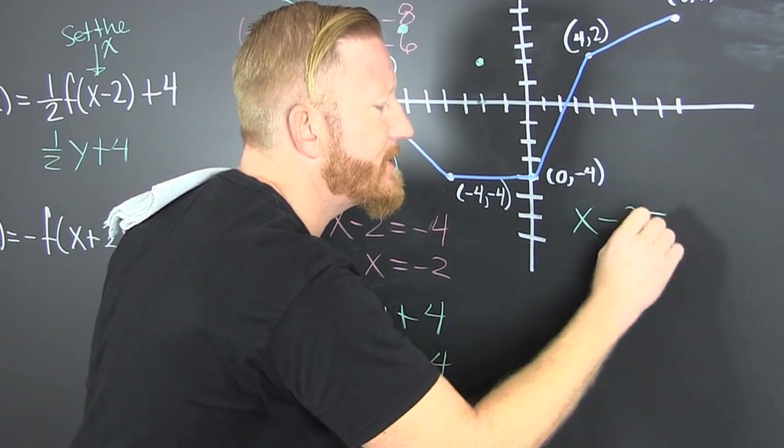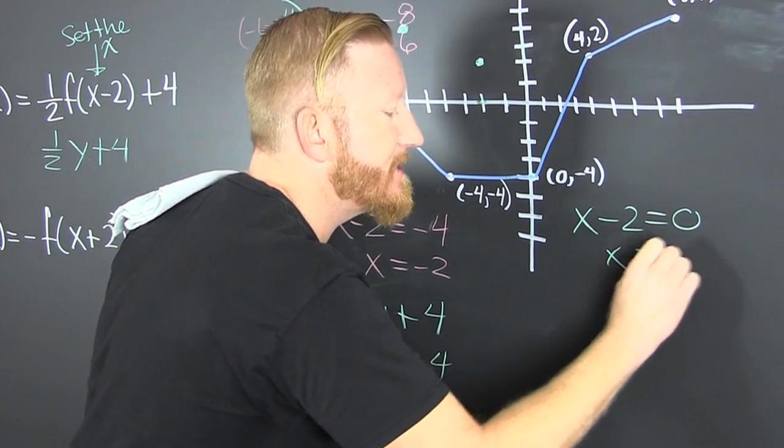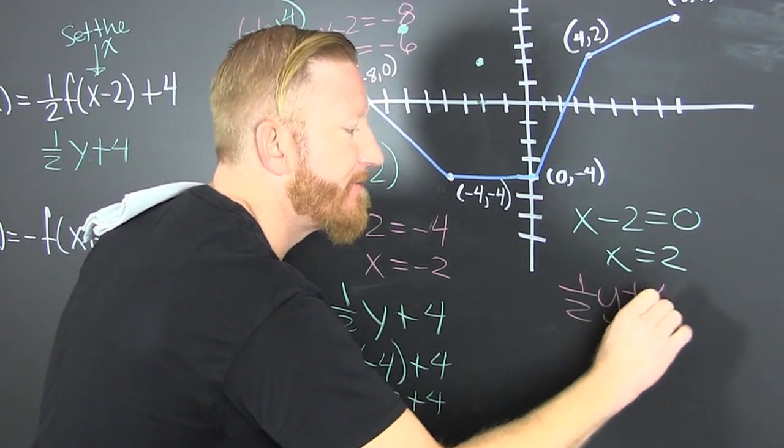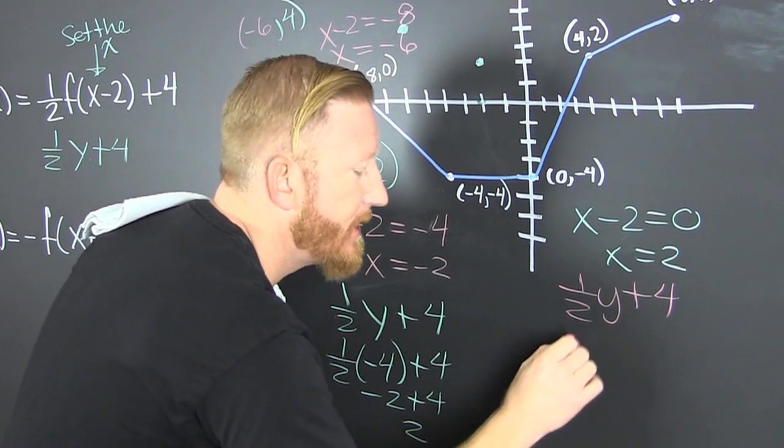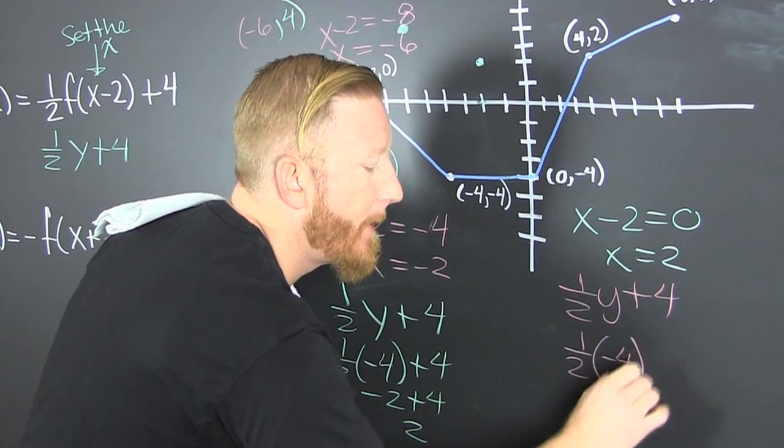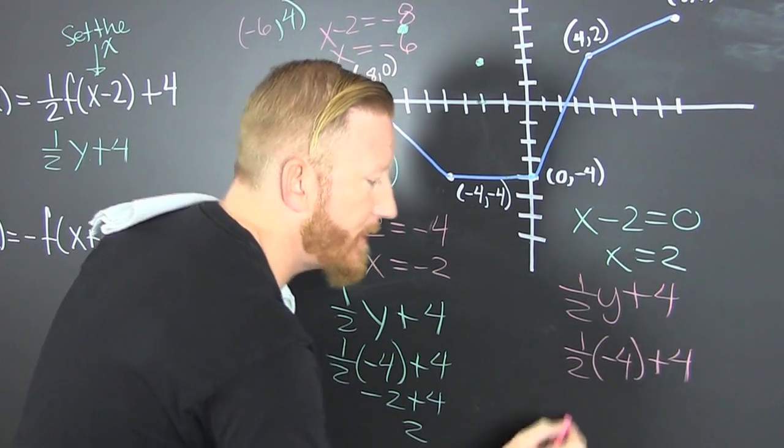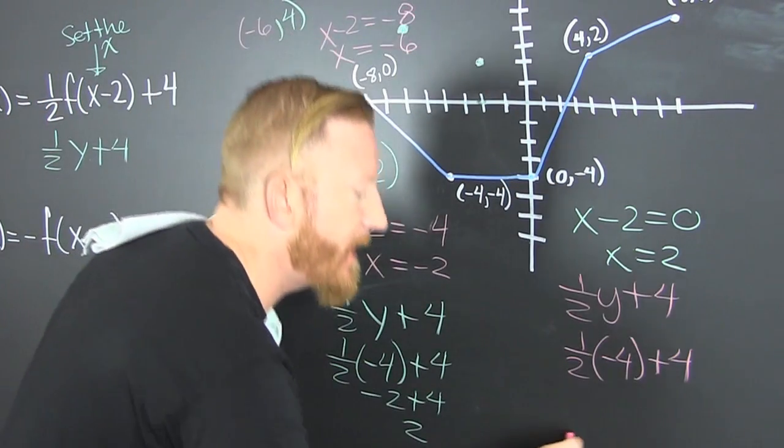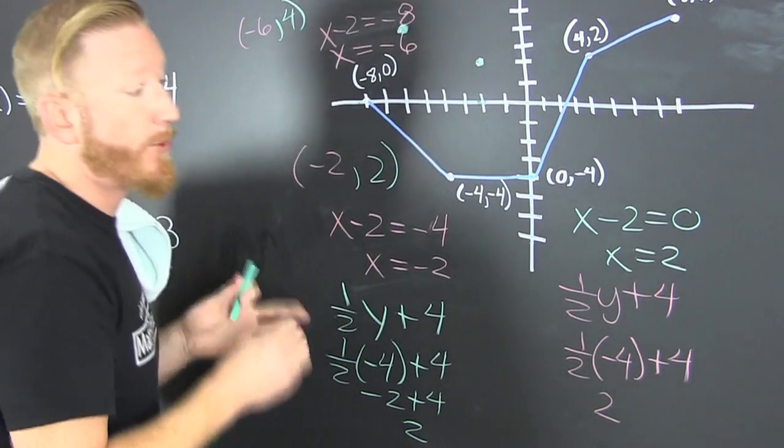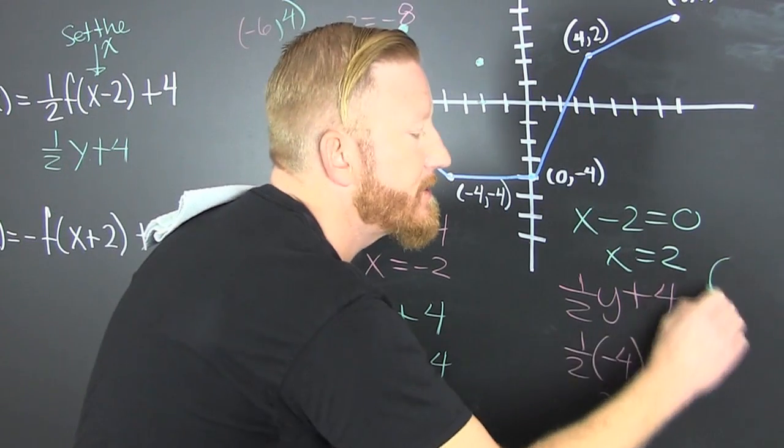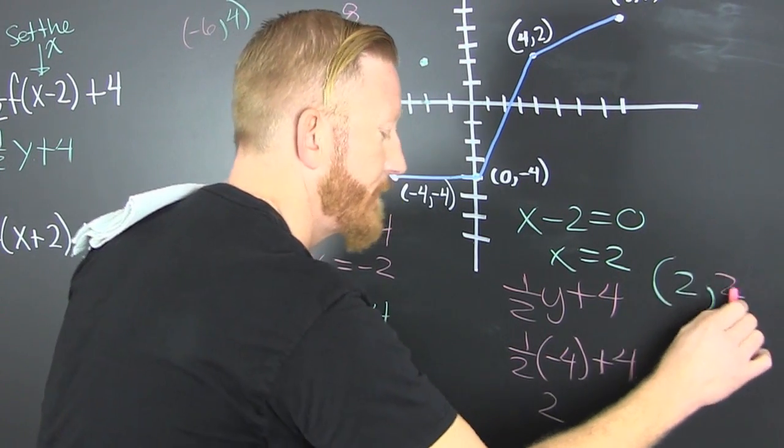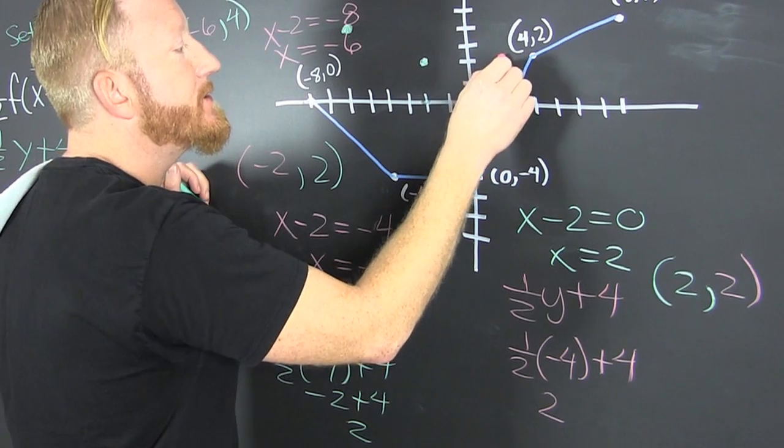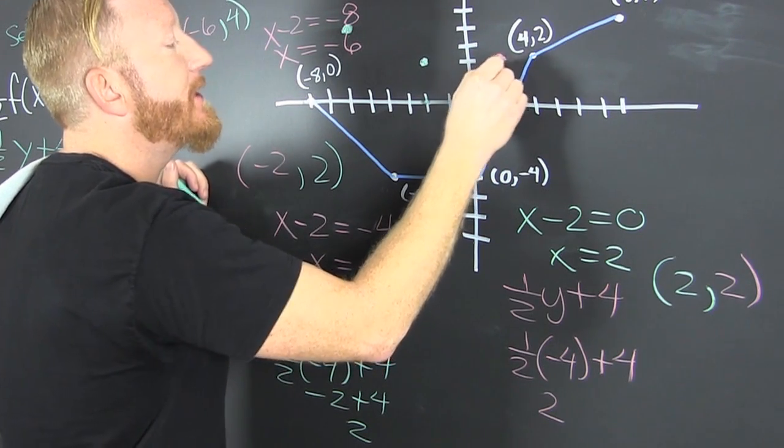Let's translate this point. I've got x minus 2 is equal to 0. So then x is equal to 2. Now I have 1 half y plus 4. That's 1 half minus 4 plus a 4. Certainly it is because they have the same y value. That's 2. So our new point is 2, 2. What does a ballerina wear? This is 2 and 2. That's our new point right there.